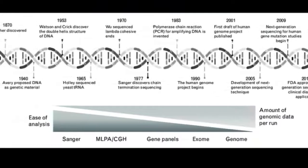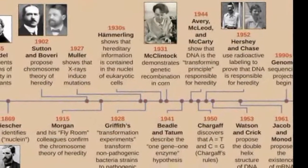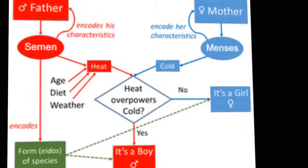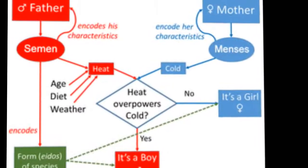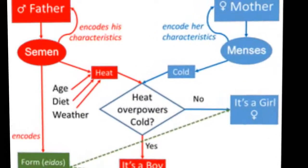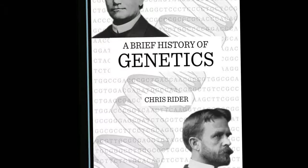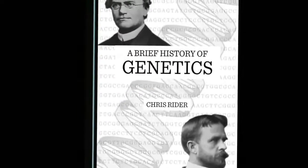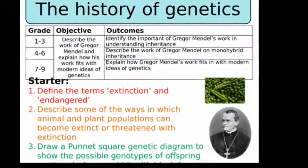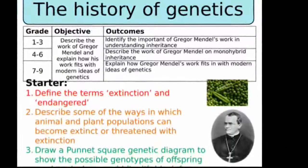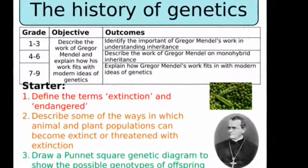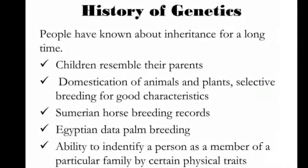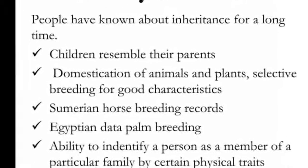Between 1856 and 1865, Gregor Mendel conducted breeding experiments using the pea plant Pisum sativum and traced the inheritance patterns of certain traits. Through these experiments, Mendel saw that the genotypes and phenotypes of the progeny were predictable and that some traits were dominant over others. These patterns of Mendelian inheritance demonstrated the usefulness of applying statistics to inheritance and contradicted 19th-century theories of blending inheritance, showing that genes remained discrete through multiple generations of hybridization.